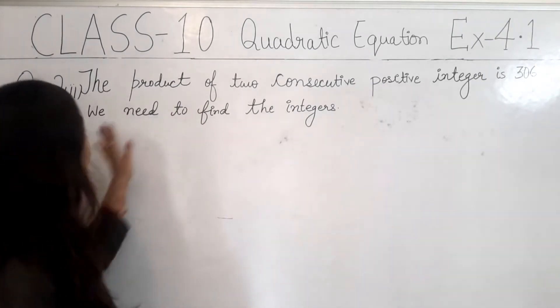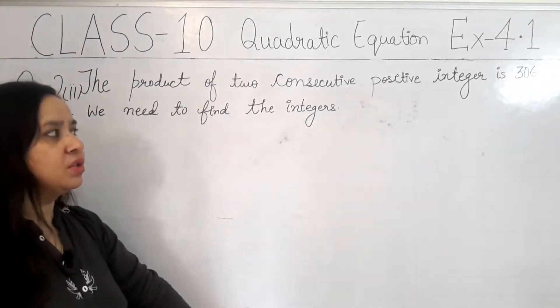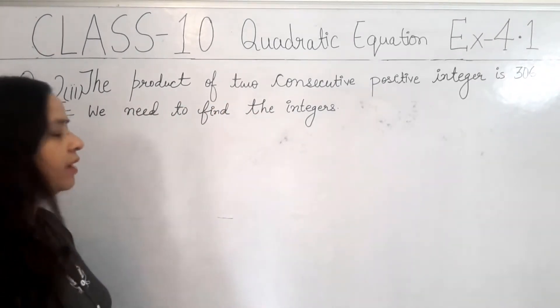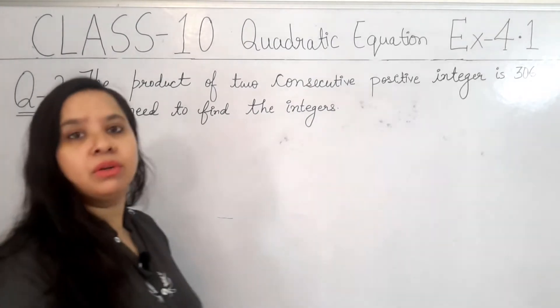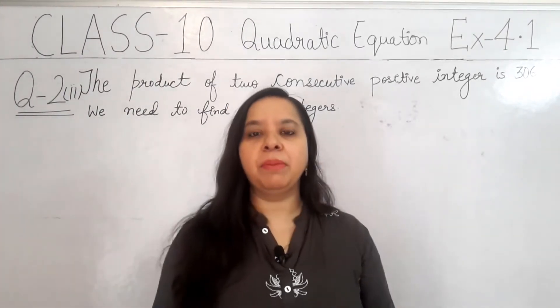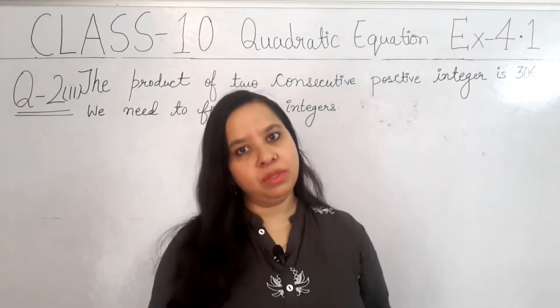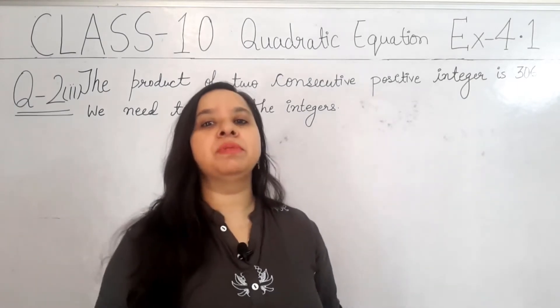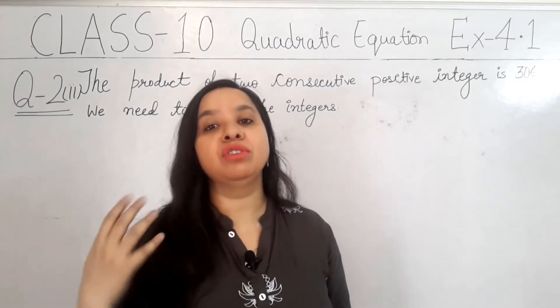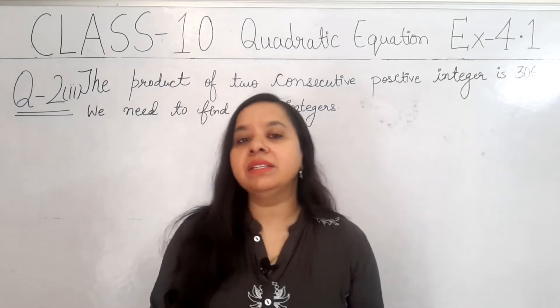In this question, we have the product of two consecutive positive integers is 306 and we have to find the integers. That is a very simple question. In this chapter, you have to form equations and then you have to simplify it. So, first of all, you need to know what positive integers are.